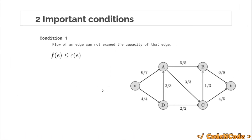There are two conditions the flow function must satisfy. The first condition is straightforward: the flow through each edge must be less than or equal to the capacity of that edge. So the numerator should be less than or equal to the denominator — flow cannot exceed the capacity of an edge.